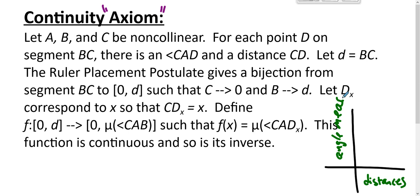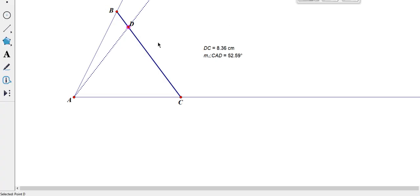We can argue a couple of things about this. The function f is increasing. As you increase the input, you increase the output. That comes from betweenness of rays.